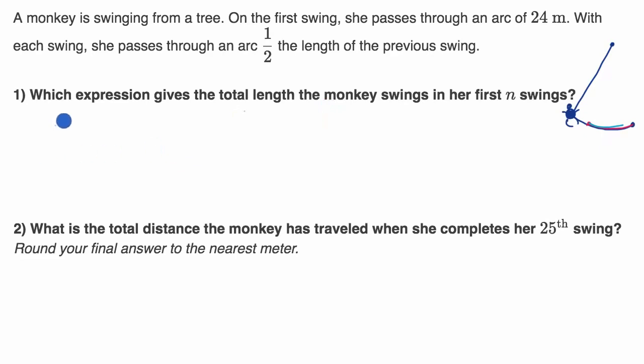So let's do this together. So we already said on the first swing, the monkey goes 24 meters. Now on the second swing, and I gave you a hint when I said to express it as a geometric series, she swings half that. Now I could just write a 12 here, but the half is interesting, because that's going to be my common ratio for my geometric series. Every successive swing, the arc length is half the arc length of the last swing.